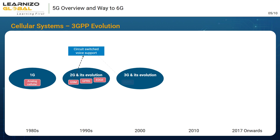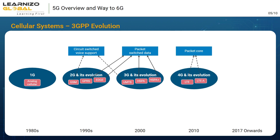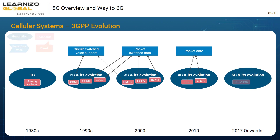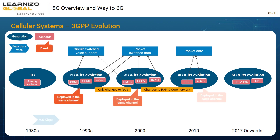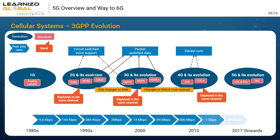3G networks provided higher data rates compared to 2G, and enhanced the experience with HSDPA and HSPA+. Both 2G and 3G networks had circuit switching as well as packet switching for data transfer. In 4G, we started with pure packet switching networks and data rates of up to 1 Gbps. 5G promises data rates up to 20 Gbps in downlink and integrates many new verticals with telecom networks.